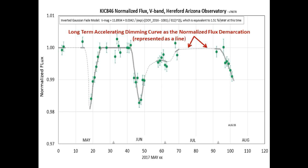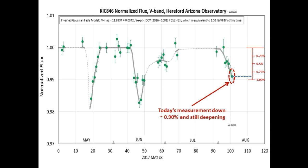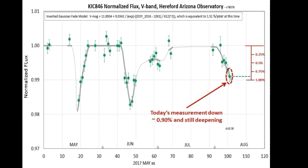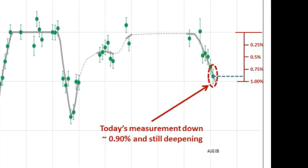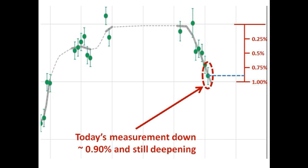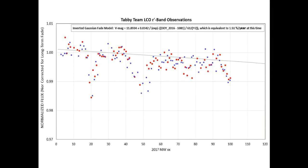He takes into account properly the long-term accelerating dimming curve of Tabby's Star as the nominal flux line. Today's measurement is now at approximately 0.9% below the nominal level and is in steep decline, as you can see by the slope of the line. This seems to be a strong beginning to this short-term dimming event, and I am wondering if this might be the beginning of a record dimming event.